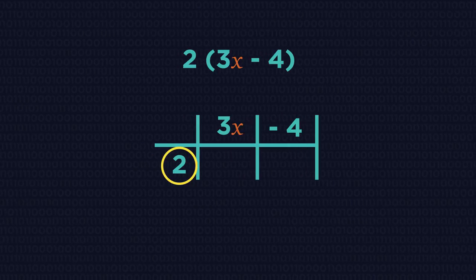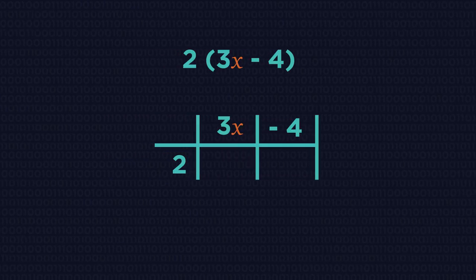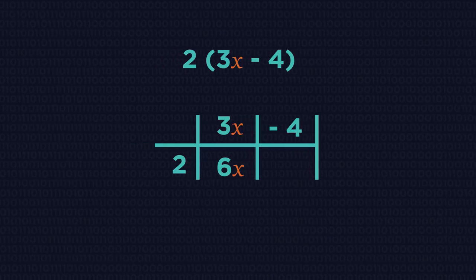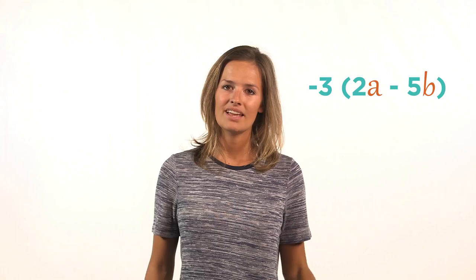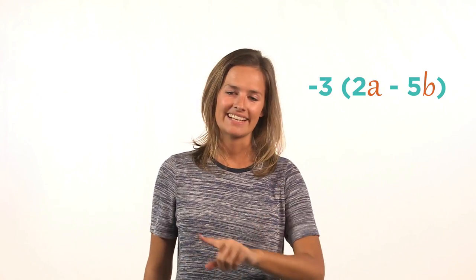Then we just multiply each part together, and you get the answer of 6x minus 8. Be careful with multiplying negatives.